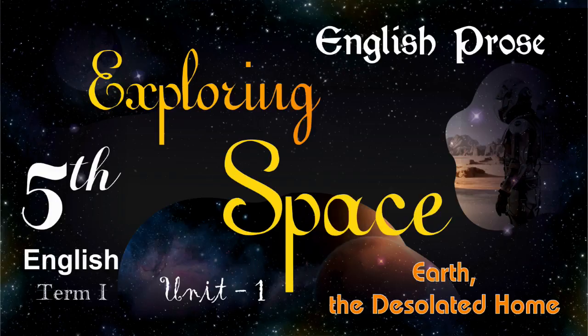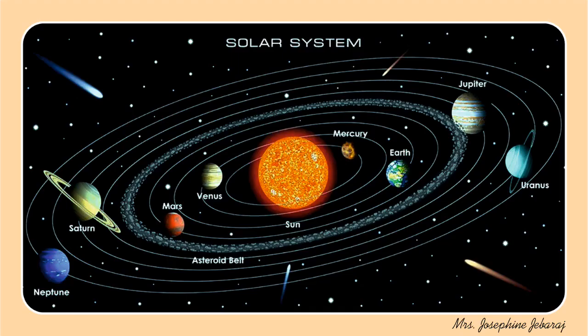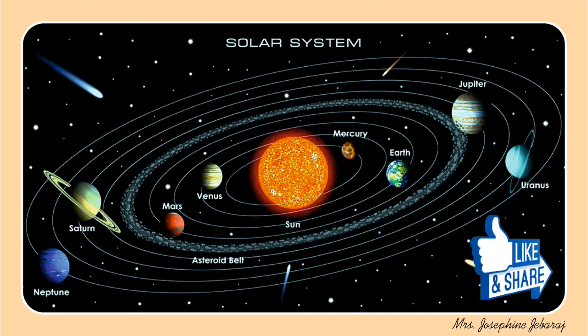Children, I think you have learned about the universe in your science or social subjects. In order to learn the lesson well, we need to have an understanding about our solar system, the blue planet Earth, and the red planet Mars. The solar system consists of the sun and everything that orbits or travels around it. This includes the 8 planets and their moons, countless asteroids, comets, and other small icy objects.